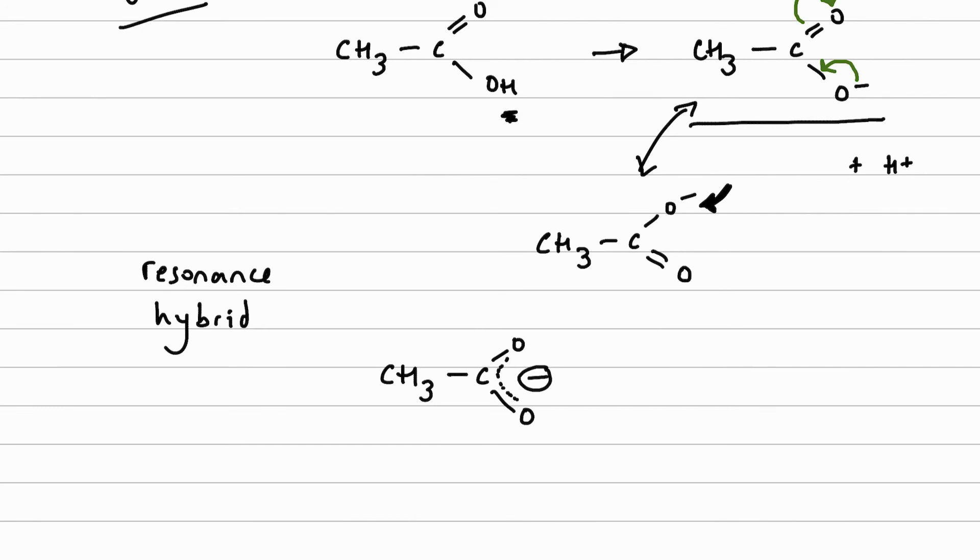So one of the reasons that carboxylic acids are acidic and alcohols are not is because alcohols don't have the ability to stabilize the negative charge on the ion through a mesomeric effect.